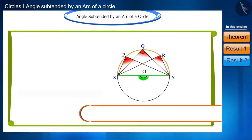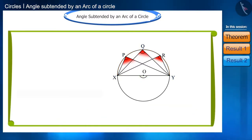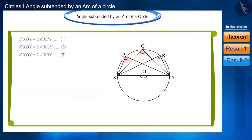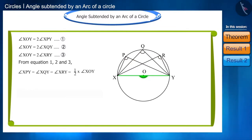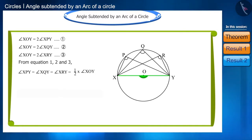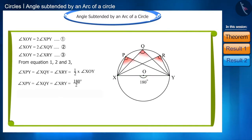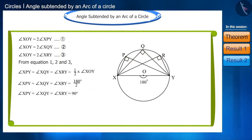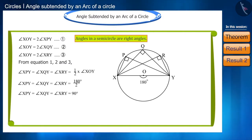Angle XOY is a straight angle, so it measures 180 degrees. Therefore, the measurement of all these angles in the semicircle will be 90 degrees. Thus we have found another property of a circle: the angle in a semicircle is a right angle.